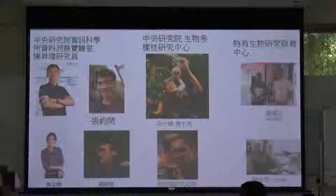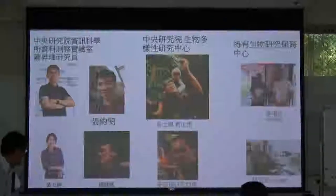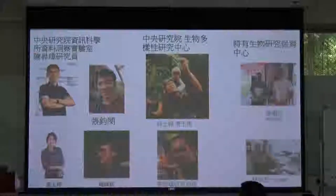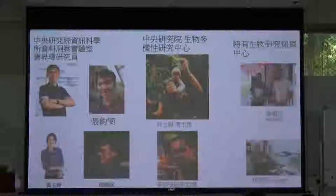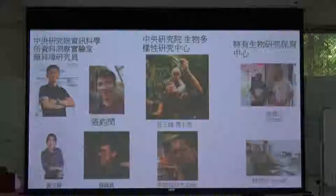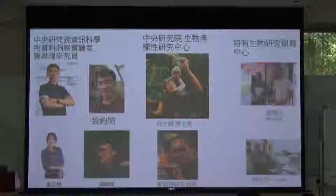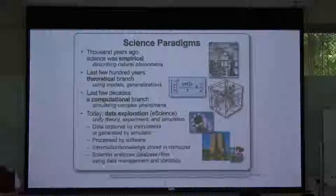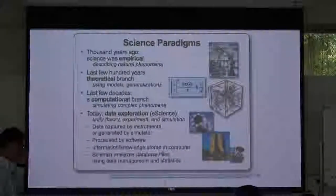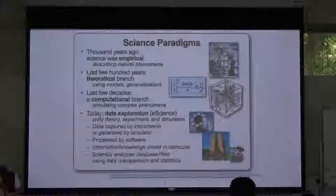First I want to acknowledge that the results I'm going to present are basically a collaboration between three parties: one from the information science lab, also in academia; my group in the biodiversity research center; and the endemic species conservation and research center, who helped collect the specimens. I want to give an overview of why we are interested in using artificial intelligence to study classical questions.